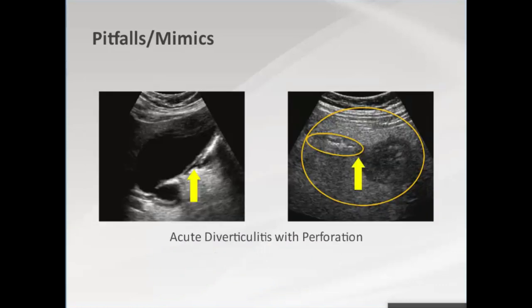Another patient, rule out acute cholecystitis: the gallbladder is distended with no stones and some pericholecystic fluid, but maximal tenderness was inferolateral to the gallbladder. Placing the probe in the region of interest revealed a thickened hepatic flexure of the colon with an inflamed, perforated diverticulum and a little jet of extraluminal gas — acute diverticulitis of the hepatic flexure mimicking acute cholecystitis.